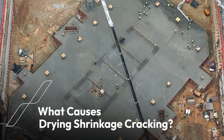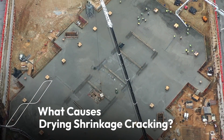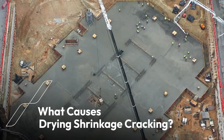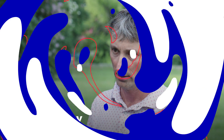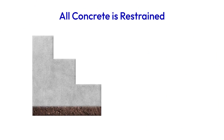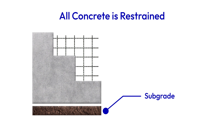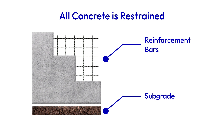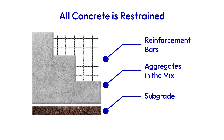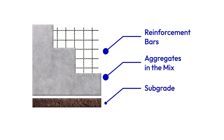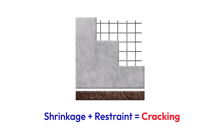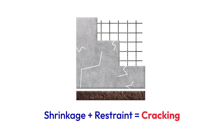Drying shrinkage cracks happen in concrete because all concrete shrinks and all concrete is restrained in some way. It's restrained by the subgrade, it's restrained by reinforcement bars, it's restrained by even the aggregates on the inside. So anytime you have shrinkage with restraint, you have cracking.